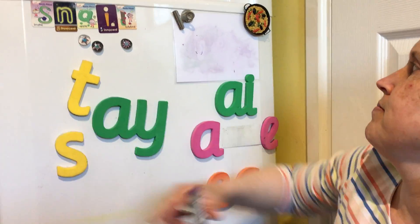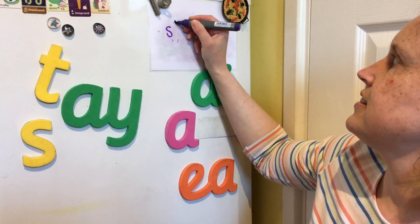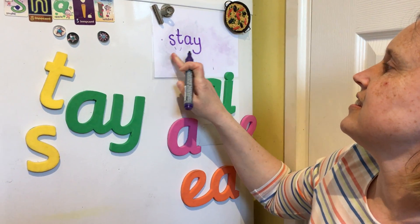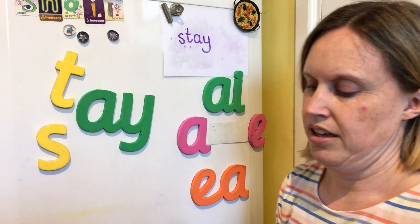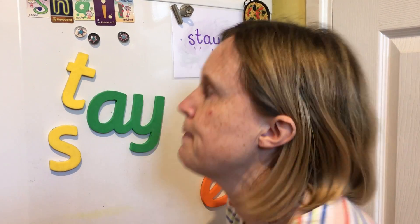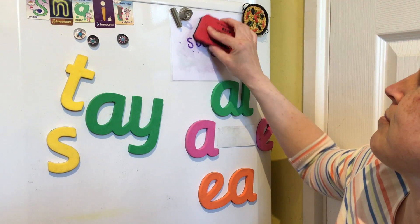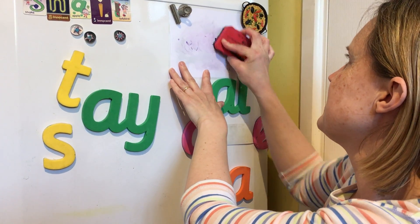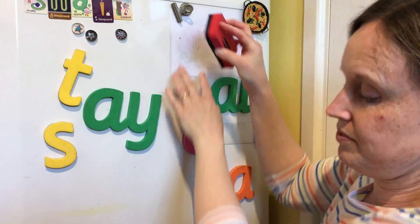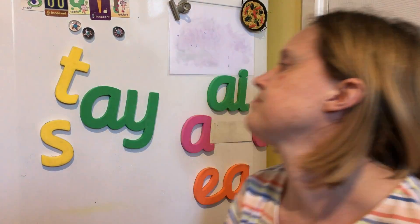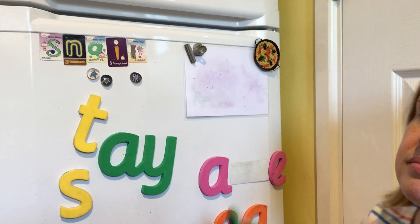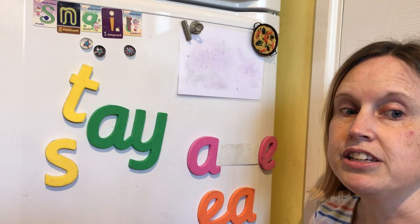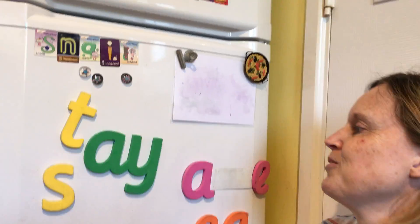Can you help me to write them? S-T-A — stay. Your turn. One, two, three. Show your grown-up. Well done.